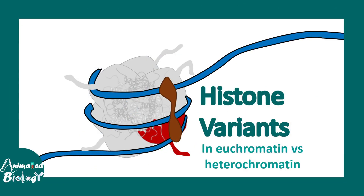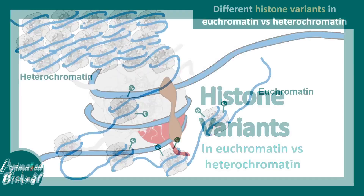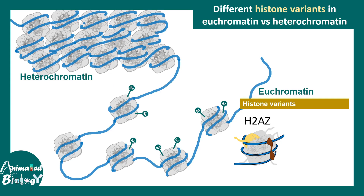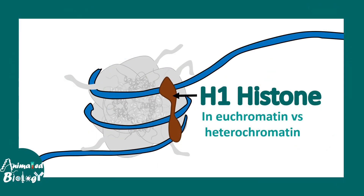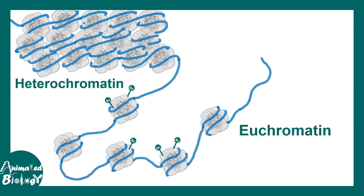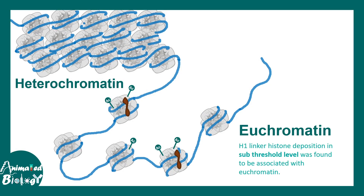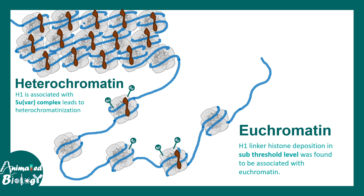There are also several histone variants that delineate euchromatin and heterochromatin. In euchromatin, one can find H2A.Z or H3.3 histone variants, whereas in heterochromatin one finds H3.1, H3.2, centromeric, and macro H2A variants. H1 linker histone is another important player — its deposition is low in euchromatin, keeping chromatin accessible, whereas in heterochromatin there is high H1 density, recruiting factors that promote heterochromatinization.